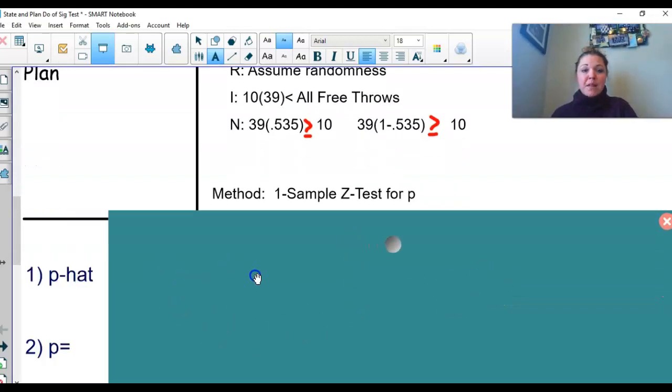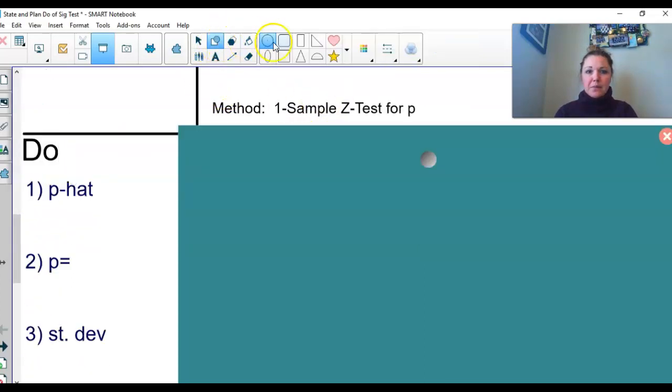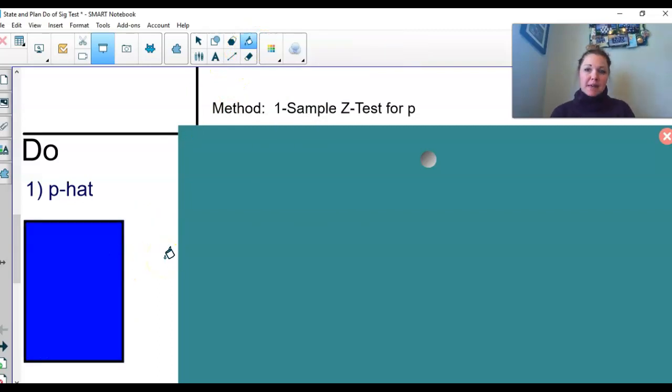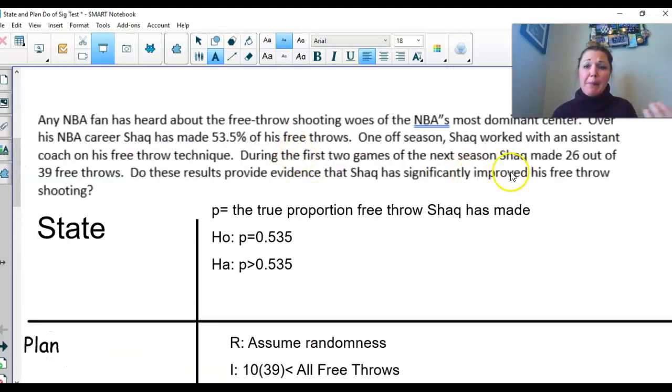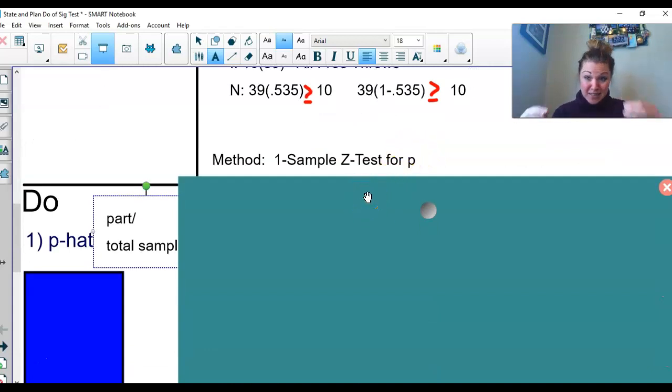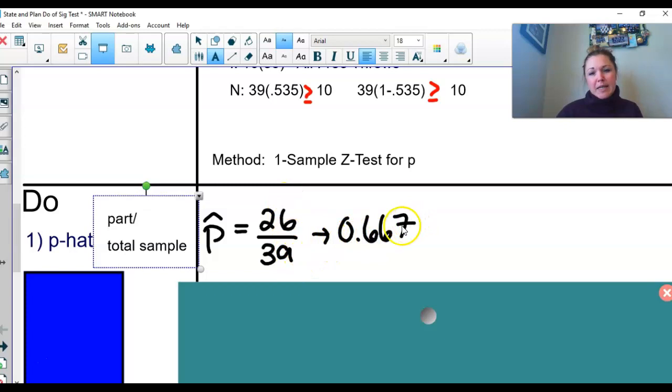This is the new stuff. First step, this is the do now. So our first step is to find our P hat, and what you need to know about your P hat is your P hat is your part divided by your total sample. So what do we know about our part divided by our total sample? So if we go back up and read, we see that right here that Shaq made 26 out of 39. He made part out of all of the shots that he made. So 26 divided by 39. That is our P hat. That's our statistic that's describing the sample of 39.